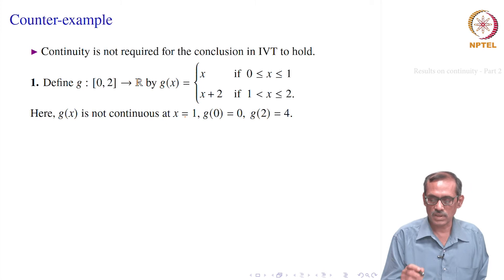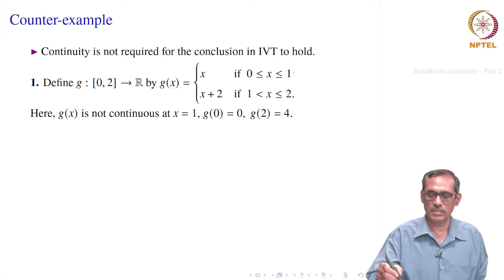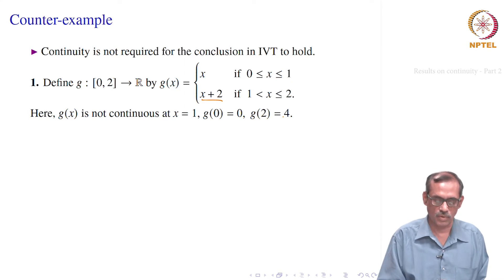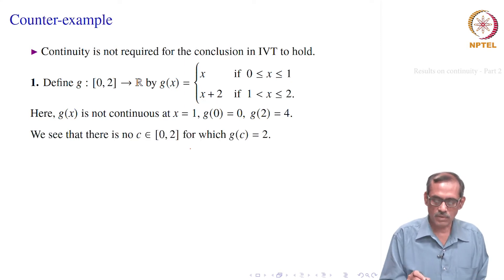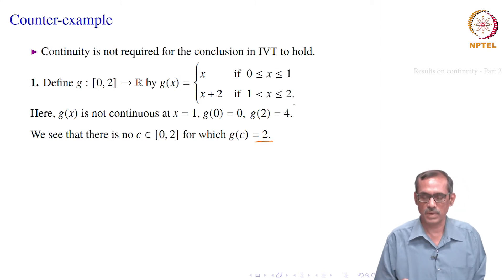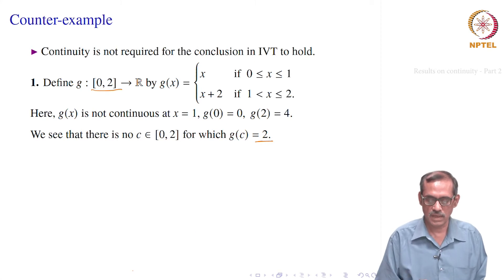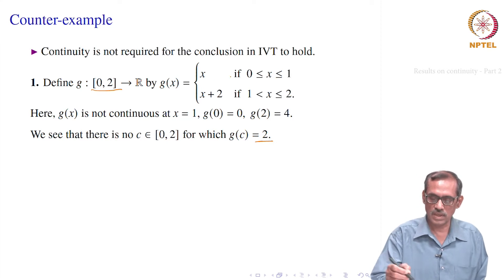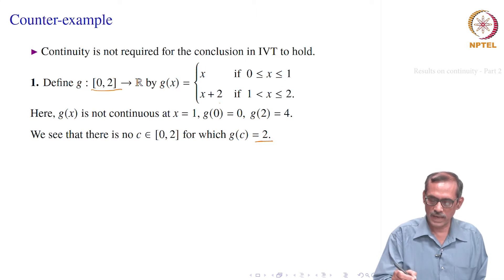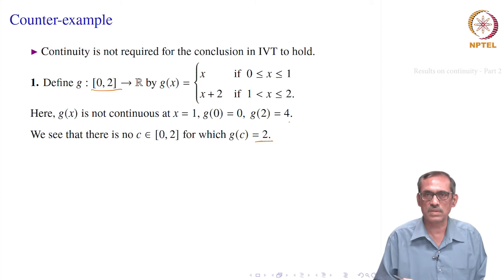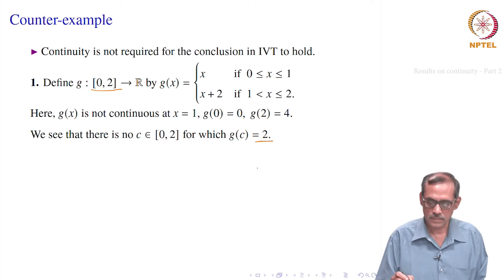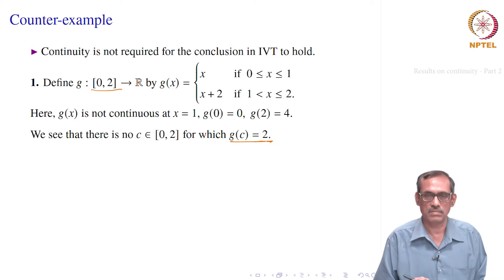We find that it is not continuous at x=1; there is a break point there. g(0) = 0 and g(2) = 4 by the second condition. We see that 2 lies between 0 and 4, but there is no point c in its domain such that g(c) = 2, because g achieves values from 0 to 1 as x varies from 0 to 1, and again from 3 to 4. From 1 to 3, nothing is mapped.